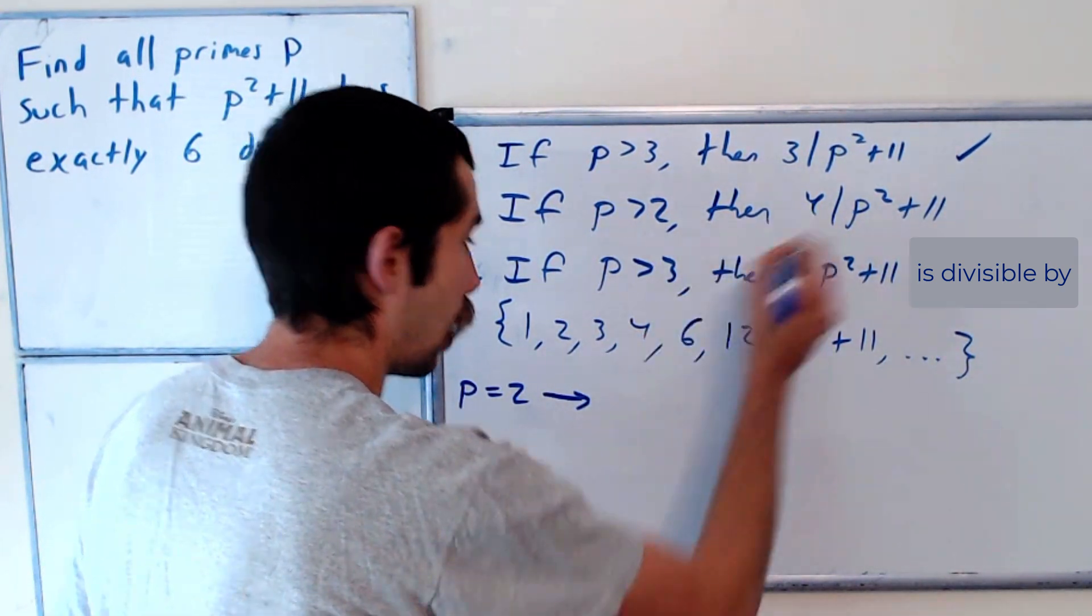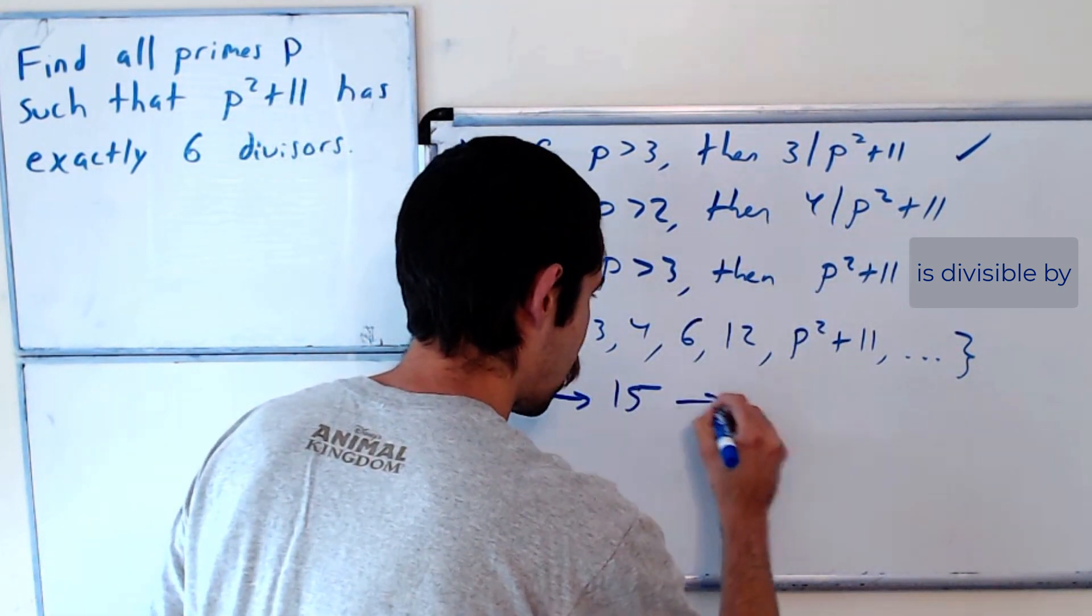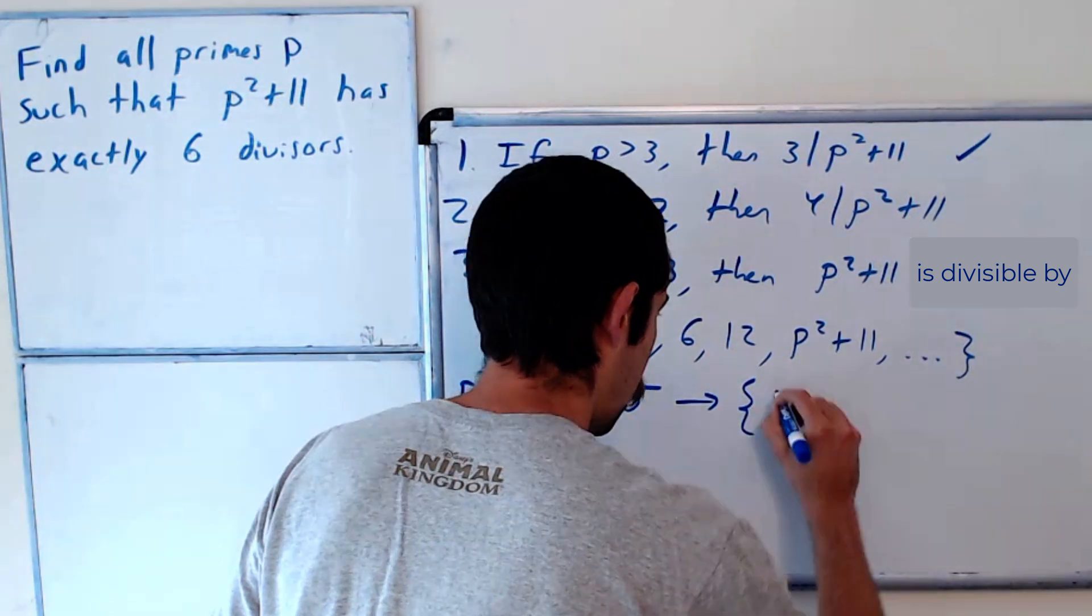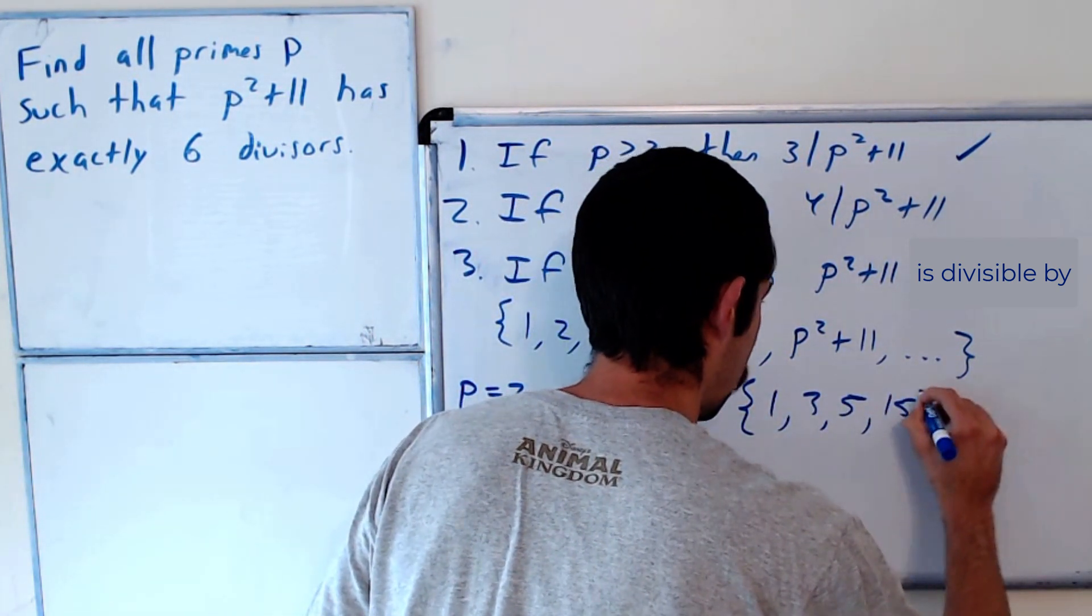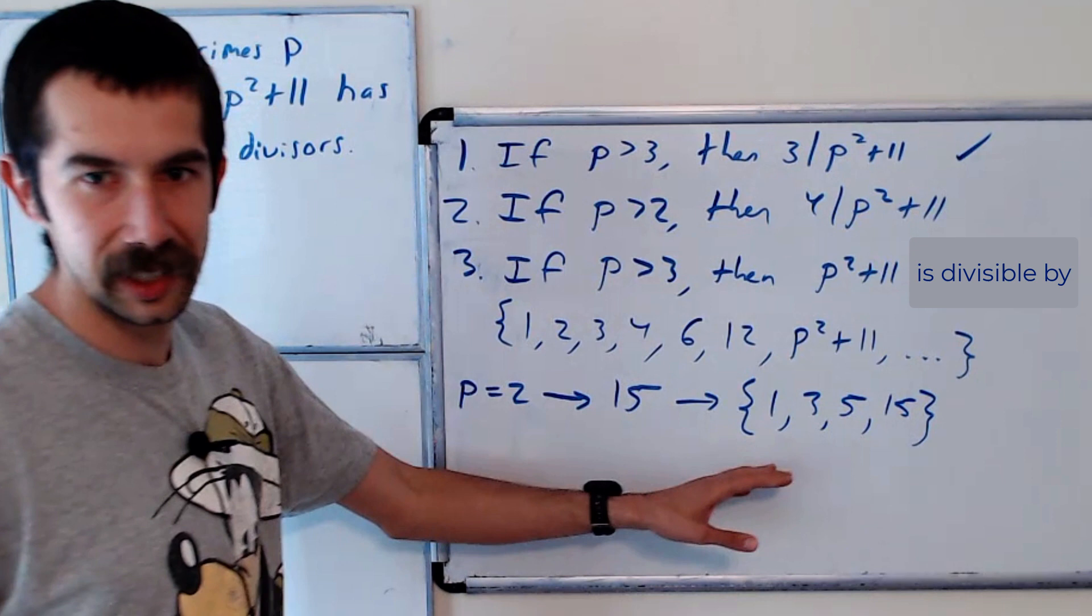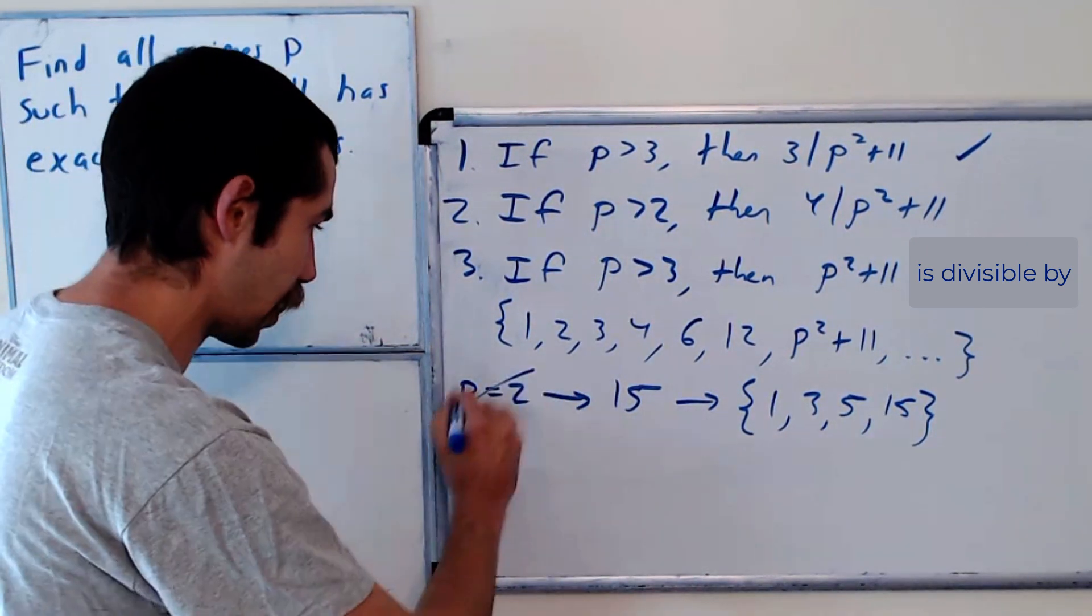Then that gives us 15. The divisors of 15 are 1, 3, 5, and 15. Okay, that's not 6. That's only 4 of them. So p equals 2 is not a solution.